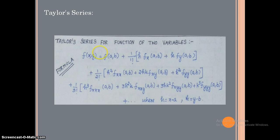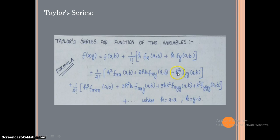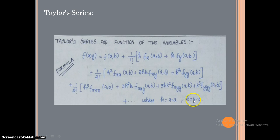The Taylor series for a function of two variables. The definition is: f(x,y) = f(a,b) + (1/1!) [h·fx(a,b) + k·fy(a,b)] + (1/2!) [h²·f_xx(a,b) + 2hk·f_xy(a,b) + k²·f_yy(a,b)] + (1/3!) [h³·f_xxx(a,b) + 3h²k·f_xxy(a,b) + 3hk²·f_xyy(a,b) + k³·f_yyy(a,b)] + ... where h = x − a and k = y − b.